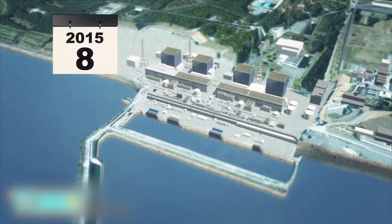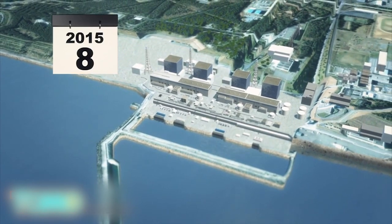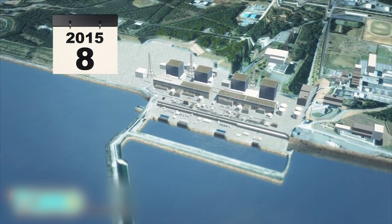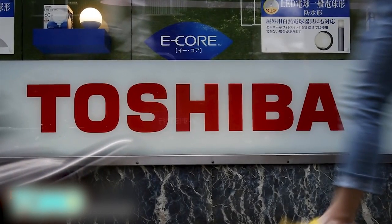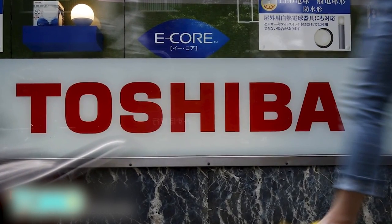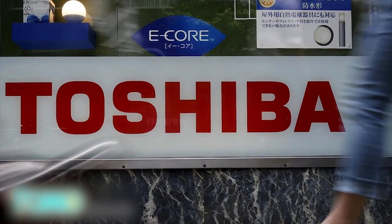Experts will begin testing the device in July, with the robot expected to be deployed into the nuclear power plant in August. Since the 2011 earthquake and tsunami in northern Japan that caused a radiation leak and evacuations, experts have not been able to determine the conditions inside the Fukushima nuclear power plant.